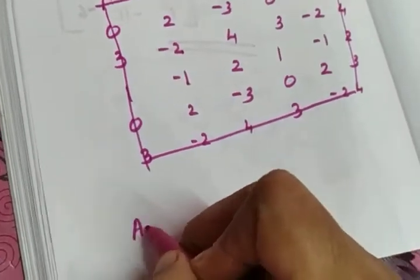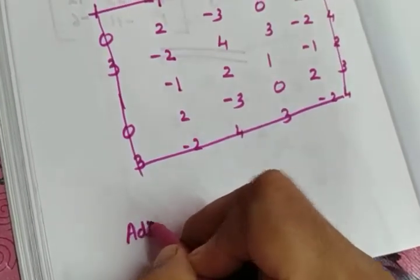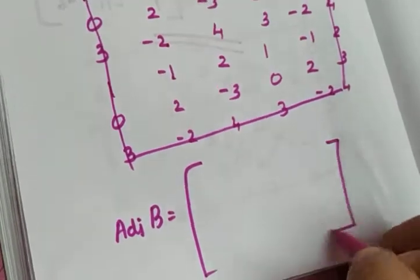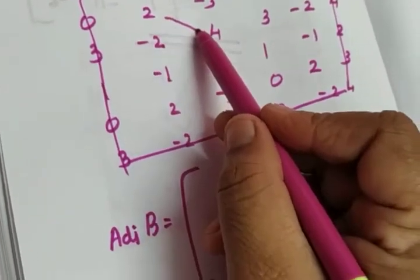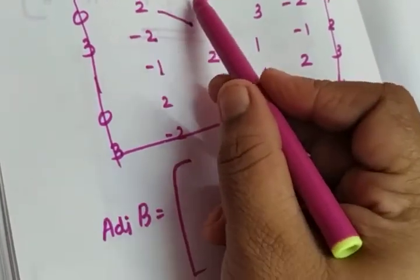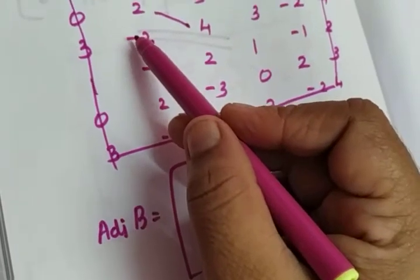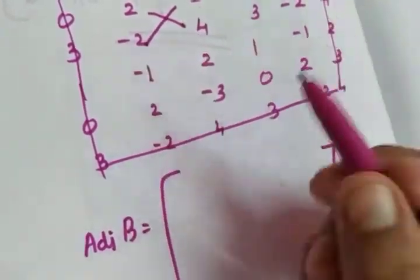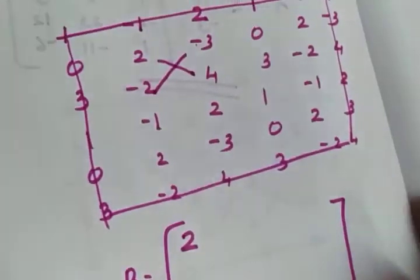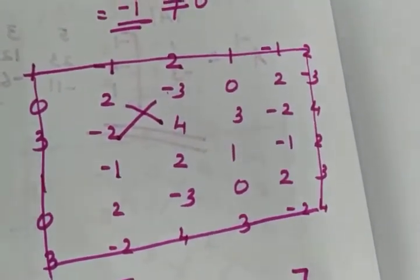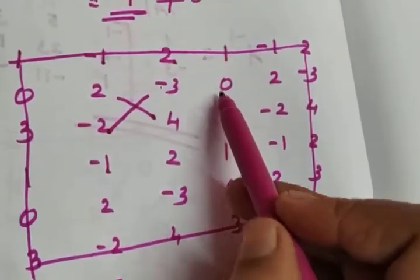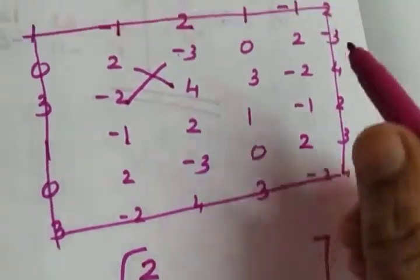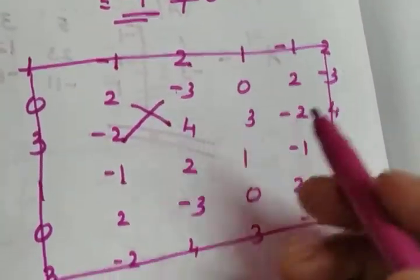The adjoint of B is calculated row-wise and written column-wise. First cofactor: 2×4 - (-3)×(-2) = 8 - 6 = 2. Next: (-3)×3 - 0 = -9. Next: 0 - (-6) = -6. First column of the adjoint is complete: [2, -9, -6].